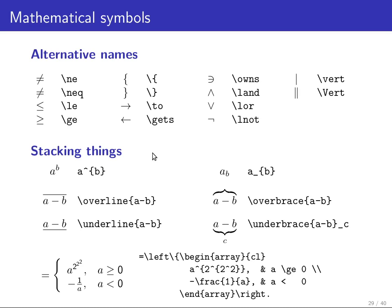For some of these mathematical symbols, there are alternative shorter names, for example, instead of backslash not equals, you can also write backslash ne for not equal and so on. The arrow to the right can also be written as backslash to because that's a common meaning in mathematics.